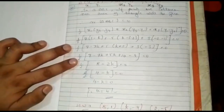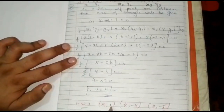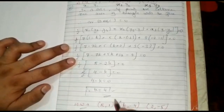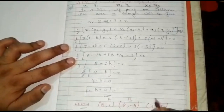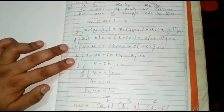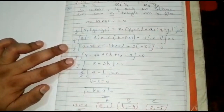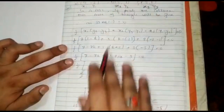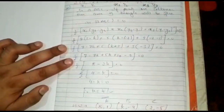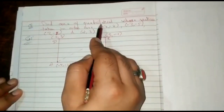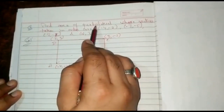Here is one more homework question: the points are A(8, 1), B(k, −4), and C(2, −5). Use the same formula, set area equal to zero, and find the value of k for which these points are collinear. Do it by yourself.